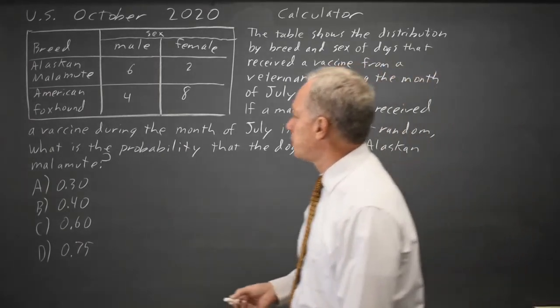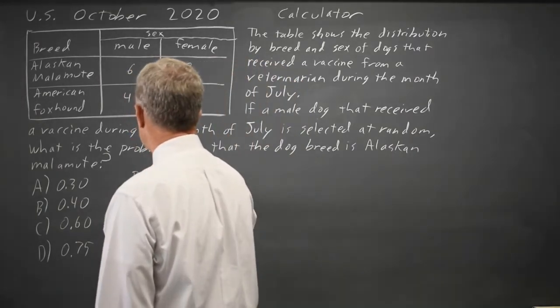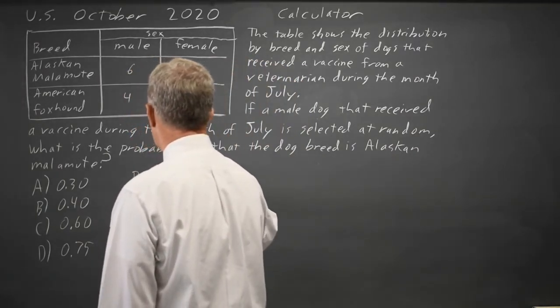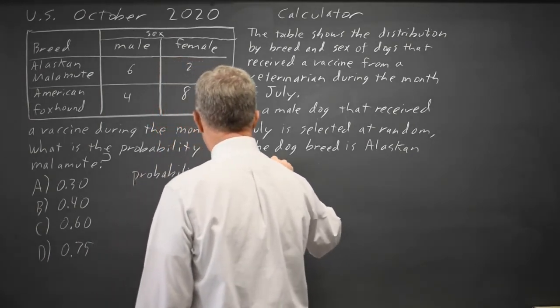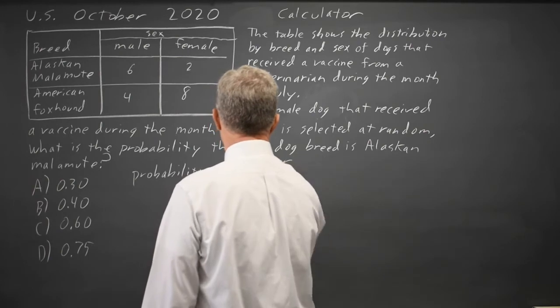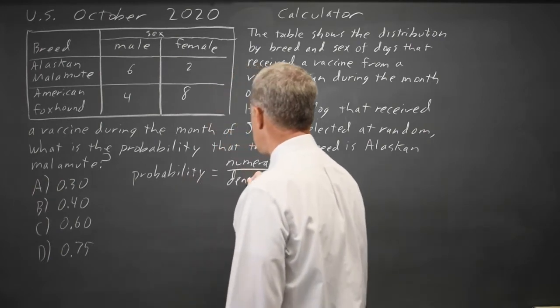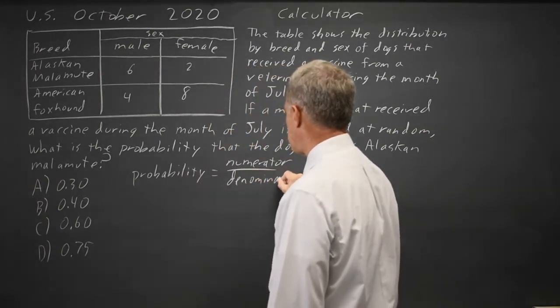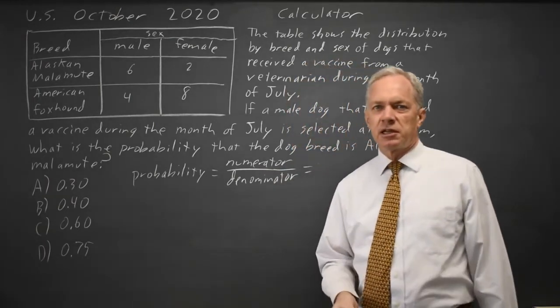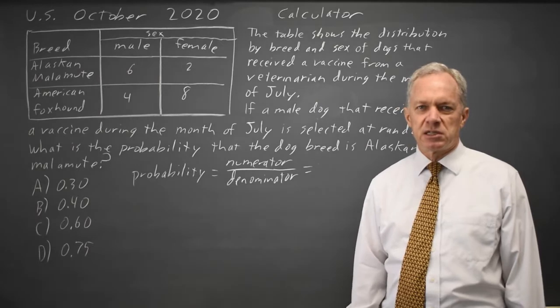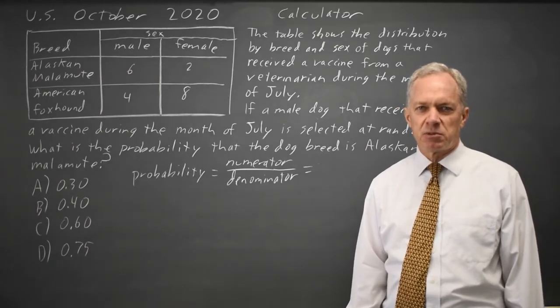When you're finding probabilities from a table, I like to write the probability equals some numerator over some denominator. This just helps me to organize my thoughts because it's easy to mess up probabilities from a table.